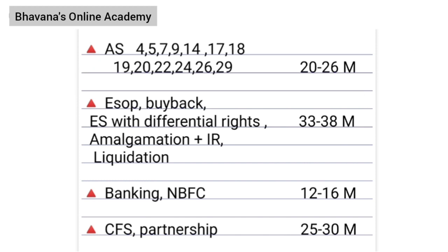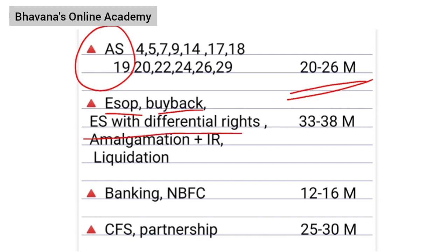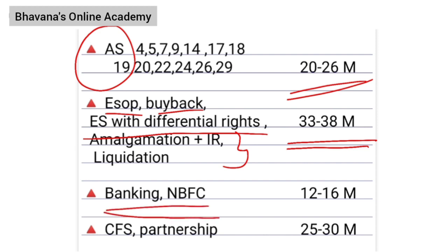So first, what we are going to see is the chapters and their weightages. Your AS has a weightage of 20 to 26 marks. Your ESOP, buyback, equity share with differential rights, amalgamation, and liquidation comes for 33 to 38 marks in the exam. Your banking and NBFC comes for 12 to 16 marks, and your CFS — consolidated financial statements — and partnership comes for 25 to 30 marks in your exams.